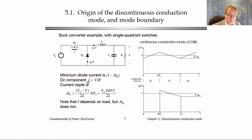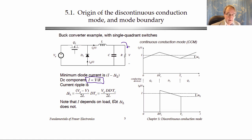Here are the expressions: the DC component capital I is the load current V over R, and delta I, the peak-to-average ripple, is the slope times the time, written in terms of VG. The ripple depends on the duty cycle, VG, the inductance, and the switching period. Importantly, the DC component depends on the load resistance or load current, but the ripple does not — the ripple depends on many things, but not on load resistance or load current.